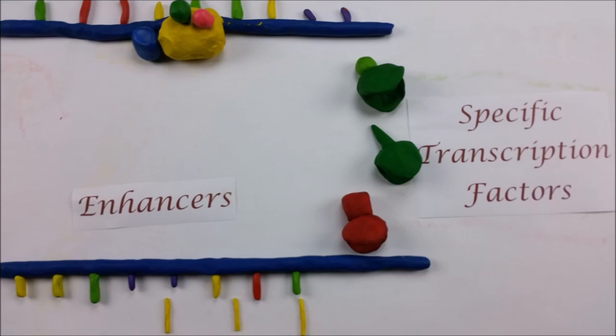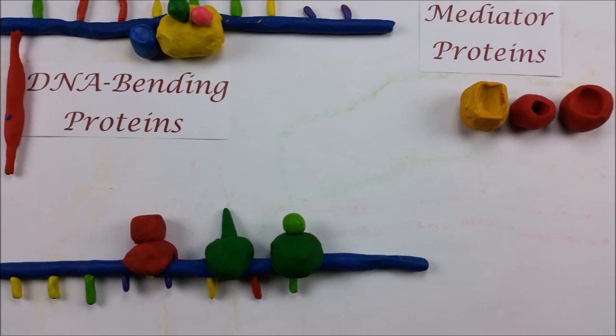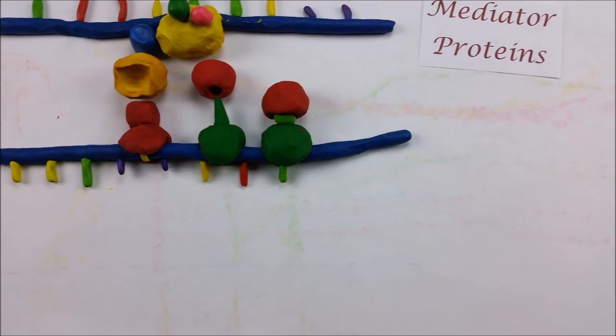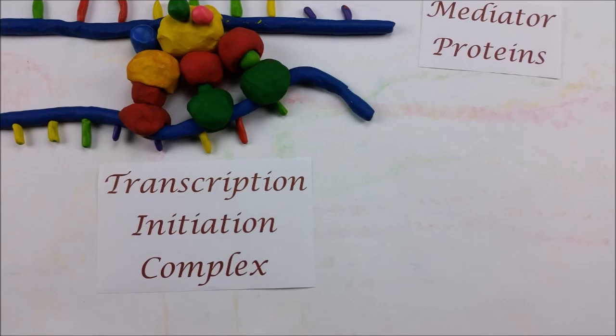Specific transcription factors bind to control elements that are in groups called enhancers. Enhancers are usually actually pretty far away from the gene, sometimes thousands of nucleotides away. Thus, other proteins called DNA bending proteins and mediator proteins are necessary to bring the enhancers close to the gene being transcribed, which allows it to interact with other proteins and position the complex for transcription.